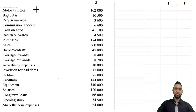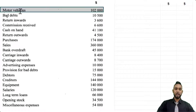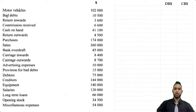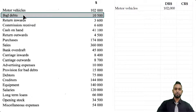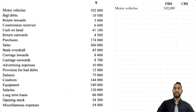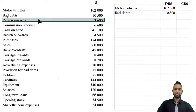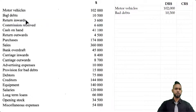Motor vehicles is the first item up and, as you know, motor vehicles is an asset and assets have debit balances. So we're going to put motor vehicles in the debit column. The next item is bad debts, which is an expense — just like assets, expenses also have debit balances. Returns inwards is a contra revenue; it decreases sales and hence also has a debit balance.